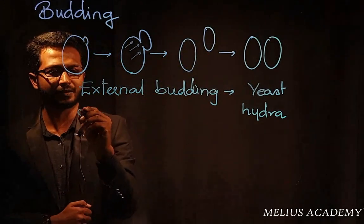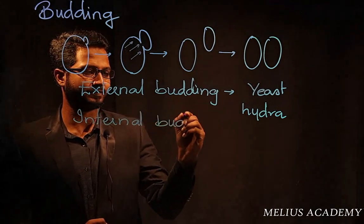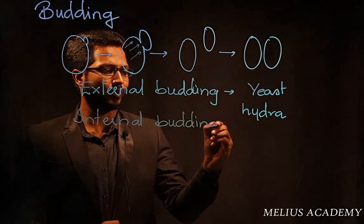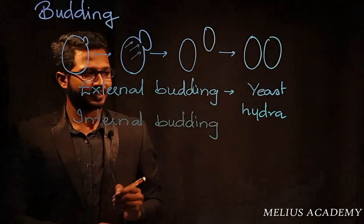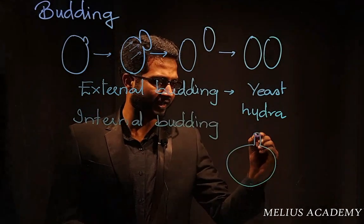Second type is internal budding. Now, what exactly is internal budding? A condition where you see that buds are actually growing within the body of an organism.